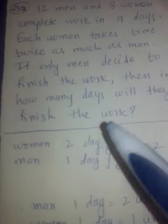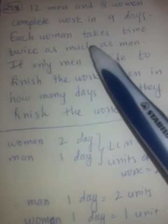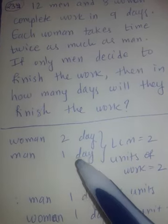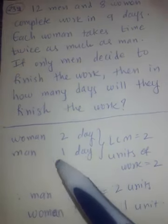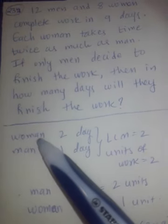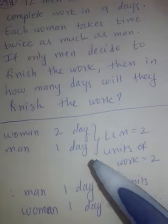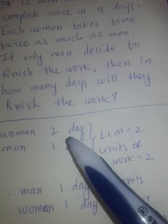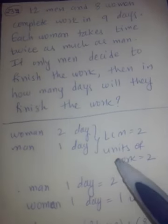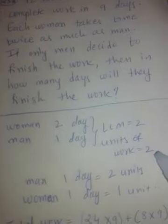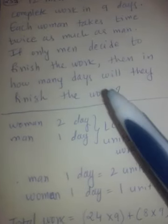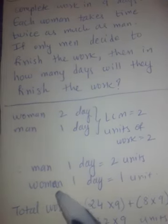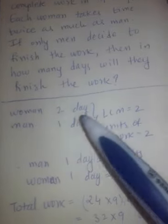Let's solve this. Since woman takes time twice as much as man, LCM of 1 and 2 is 2. Let units of work be 2. Step 1: find LCM = 2. Step 2: division. Man in one day will finish 2 ÷ 1 = 2 units. Woman in one day will finish 2 ÷ 2 = 1 unit.